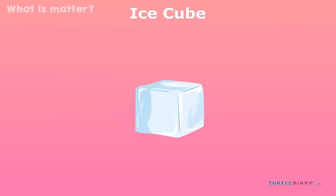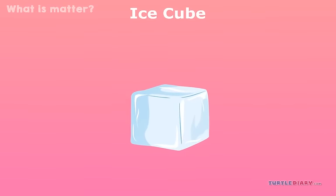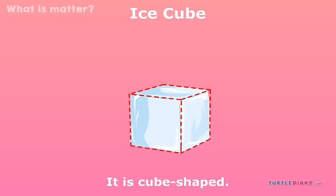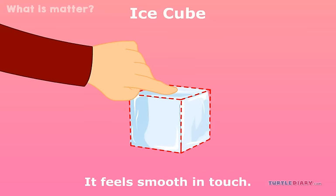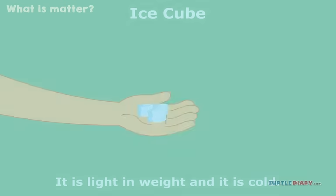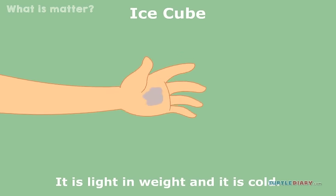For example, look at this ice cube. An ice cube has no color. It is cube-shaped. It feels smooth in touch. It has a watery taste. It is light in weight, and it is cold.